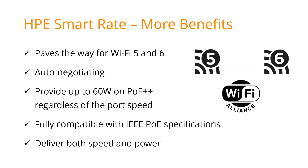HPE SmartRate multi-gigabit ethernet technology paves the way for high-speed Wi-Fi 5 and especially Wi-Fi 6 access points, as well as IoT devices, by delivering blazing fast performance. SmartRate ports are also auto-negotiating, which enables the ethernet link to settle into the highest speed achievable on a given cable configuration. Aruba switches with SmartRate PoE class 6 can provide up to 60 watts of power over ethernet regardless of port speed. The mechanism used in SmartRate for delivering power over twisted pair structured cabling is fully compatible with IEEE PoE specifications, allowing Aruba switches combining HPE SmartRate and PoE Plus Plus class 6 to deliver the speed and power required for the most power-hungry devices.